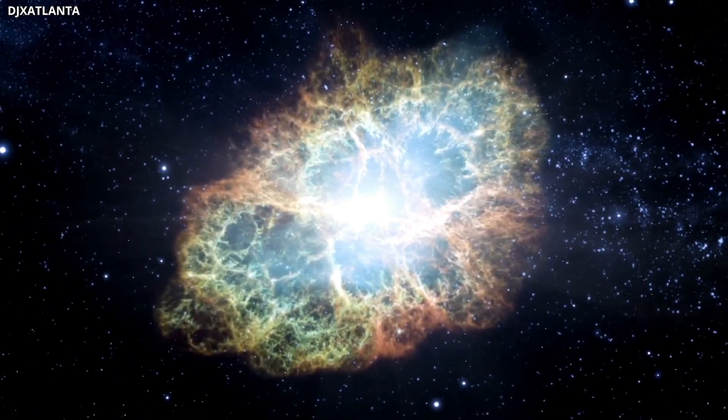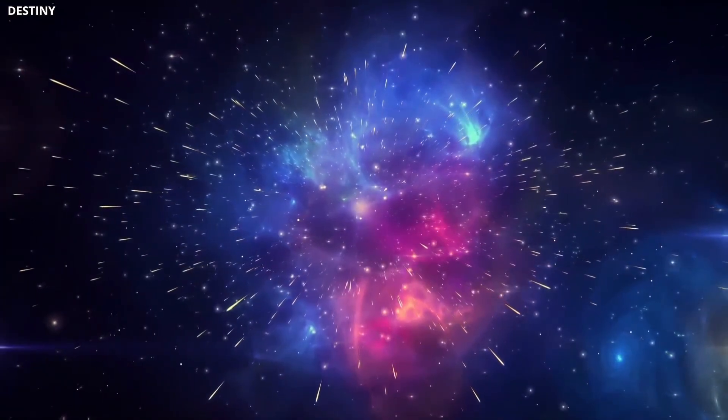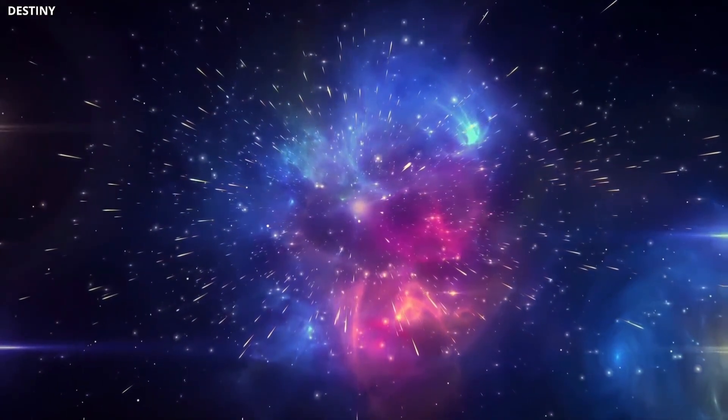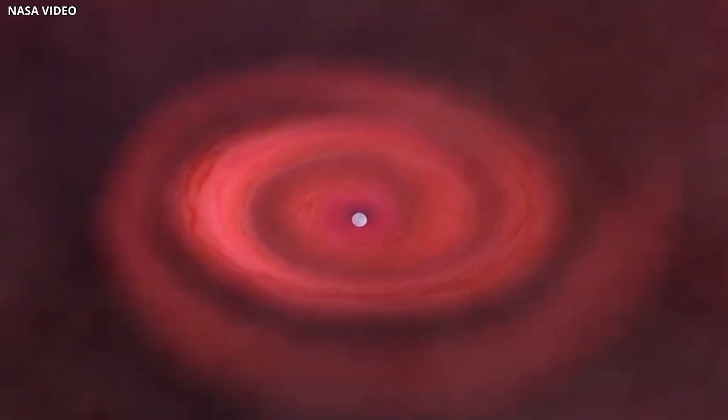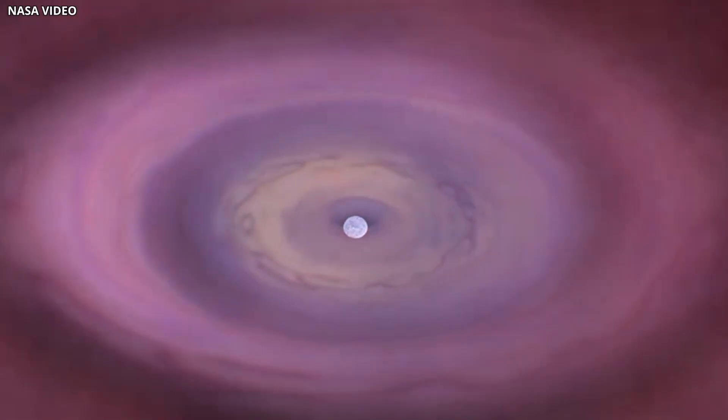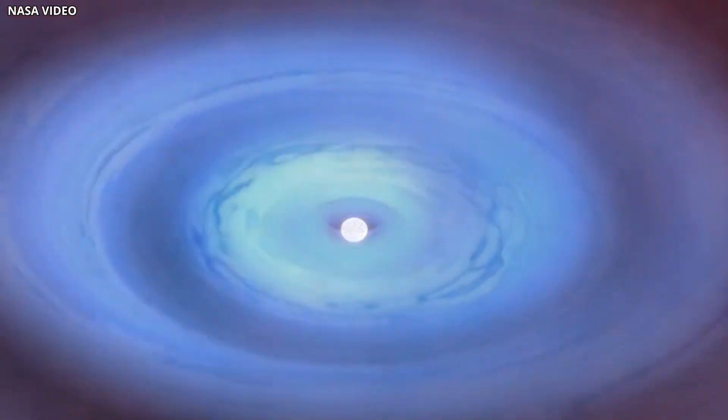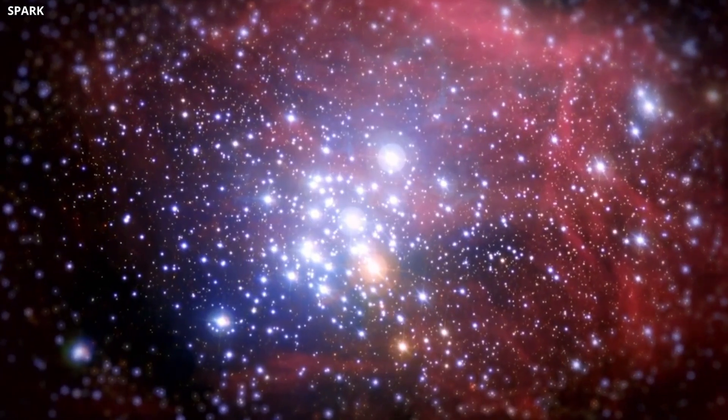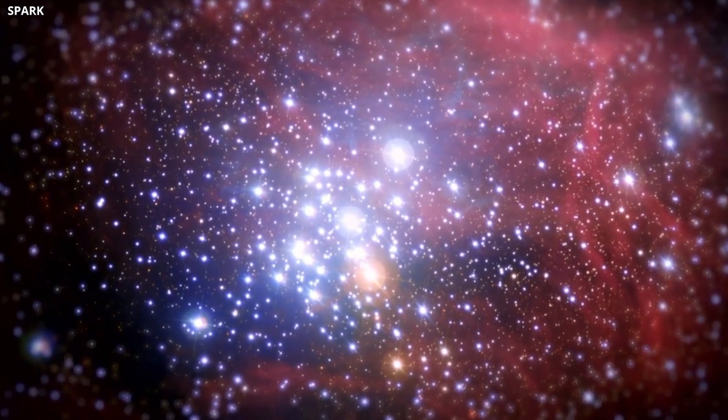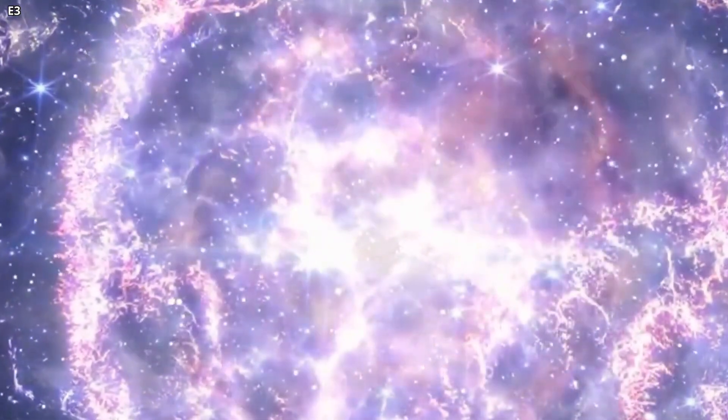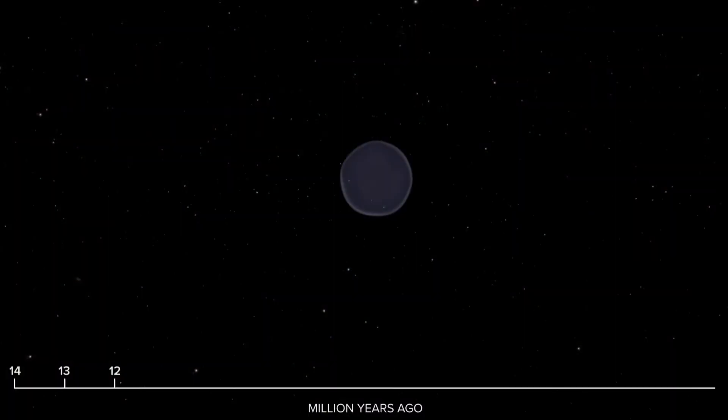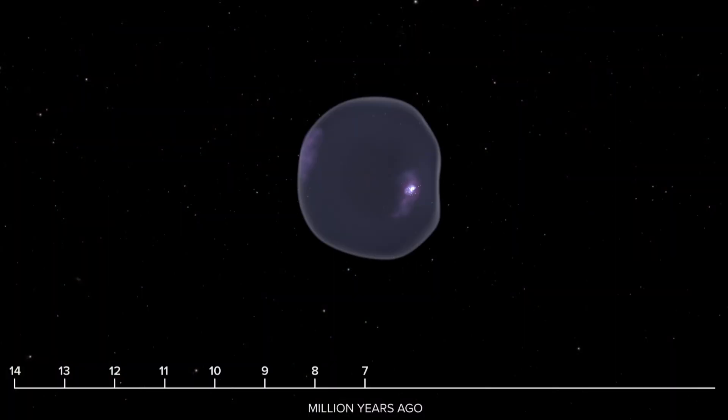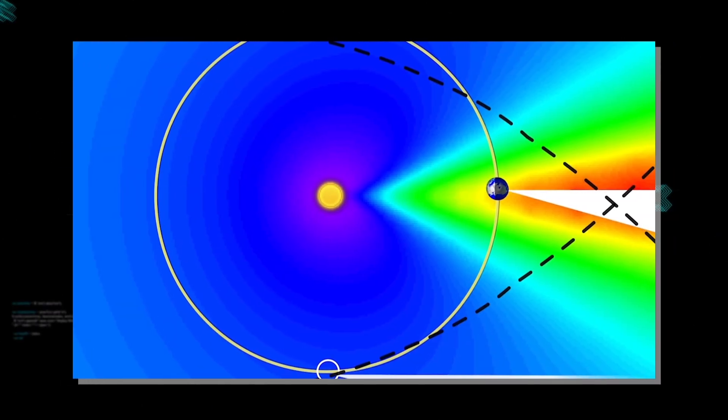When a single supernova goes off, it can carve out a cavity around it, pushing away the interstellar medium with the force of its shockwave. Plus, near the end of its life, it blasts out intense bursts of high-energy radiation, which contributes to the excavation project. Combining hundreds or even up to a thousand such supernovas can provide the energies needed to form something like the local bubble.